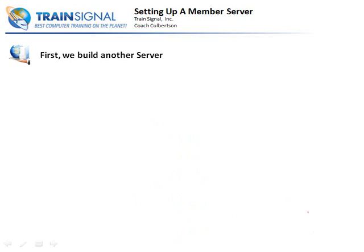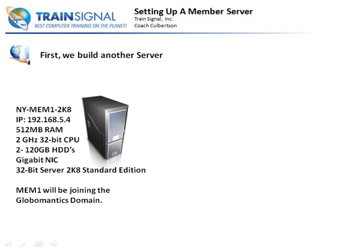We need a resource to handle all of this, so we're going to be building a server. Our new Server 2008 machine will be named nymemwum2k8 with IP address 192.168.5.4. It'll have half a gig of RAM, a two gigahertz processor, and since it's a 32-bit processor, we can only use the 32-bit version of Server. It has two 120-gigabyte hard drives and a gigabit NIC, and we're going to install the 32-bit Server Standard Edition of Server 2008.